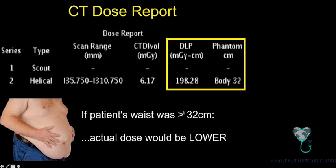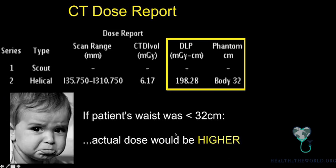What if the patient is actually bigger than 32 centimeters? Think of it like food coloring in water — the same dose delivered to a larger body area is more dilute, so actual dose is lower. Conversely, if the patient is a baby and definitely not 32 cm in diameter, you're giving the same amount of dose to a smaller body, meaning higher concentration. Depending on whether the phantom was entered correctly and whether the patient matches the phantom size, reported doses can be higher or lower than reality. This is an estimate, not a measurement.